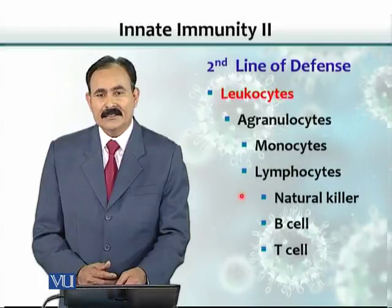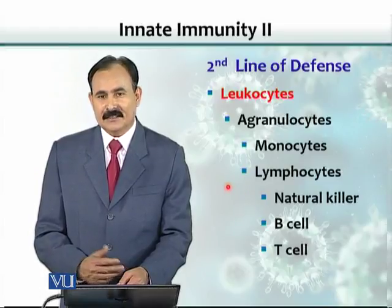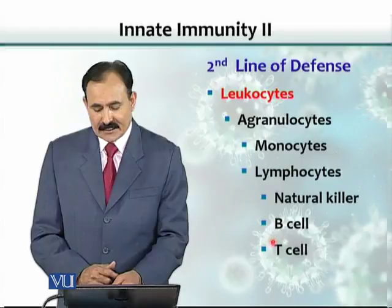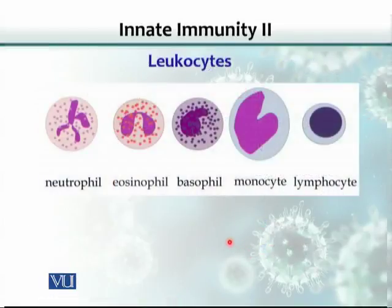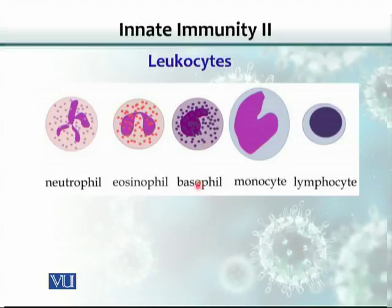Natural killer cells are non-specific cells and are part of innate immunity. B cells and T cells are not part of innate immunity — they are part of the adaptive immune response. In a blood picture, neutrophils show a typical multi-lobed nucleus, eosinophils have pink granules, basophils have blue granules, monocytes have a horseshoe-shaped nucleus, and lymphocytes can be either B or T lymphocytes.